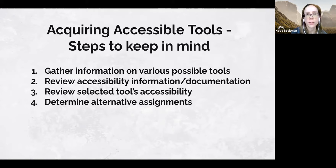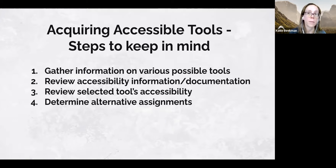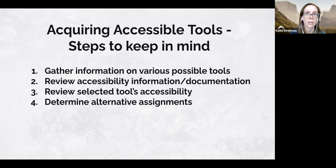Step three: review the selected tool's accessibility. Ideally someone on your campus can test the application to check for accessibility concerns, but with limited resources that's often not possible, so at least asking the vendor about how they've incorporated accessibility standards would be useful. Step four: determine alternative assignments. When a tool is necessary for student use but isn't fully accessible, having a plan with equivalent alternative options may be a necessary workaround.